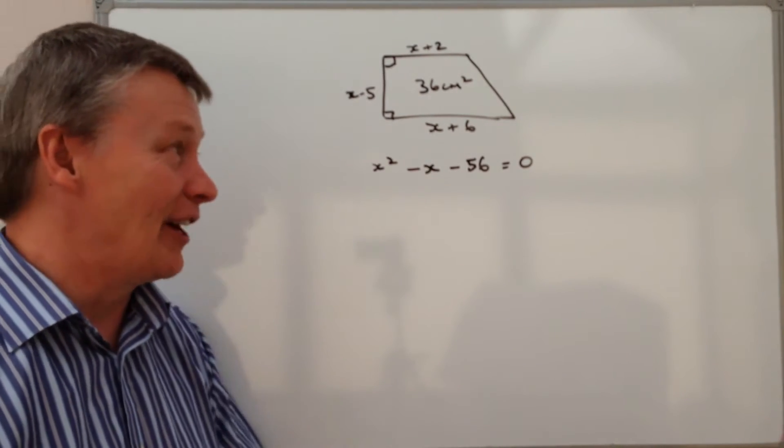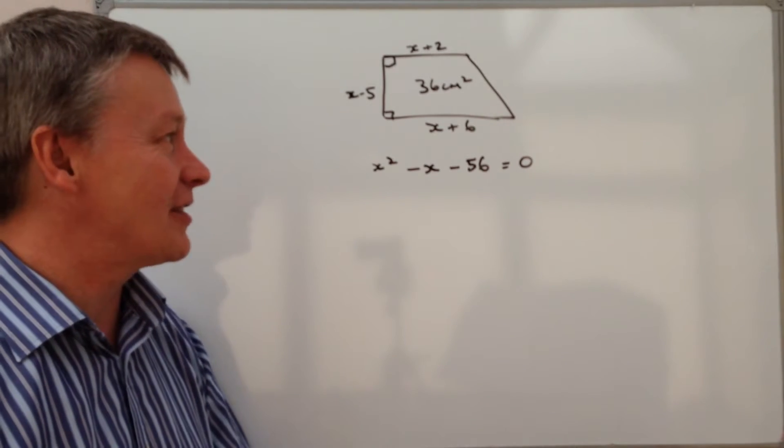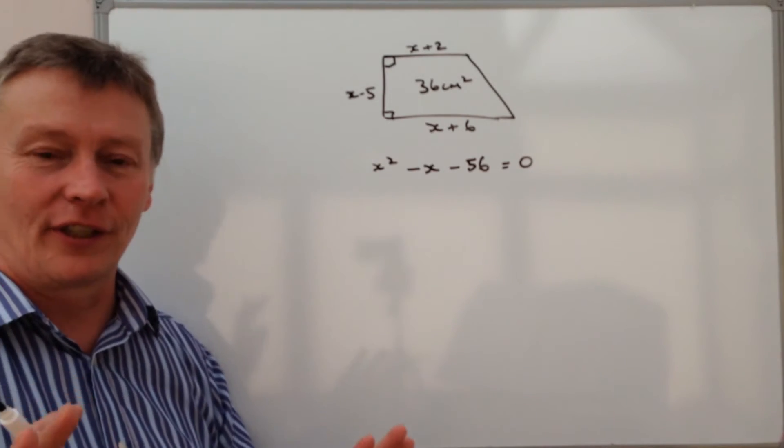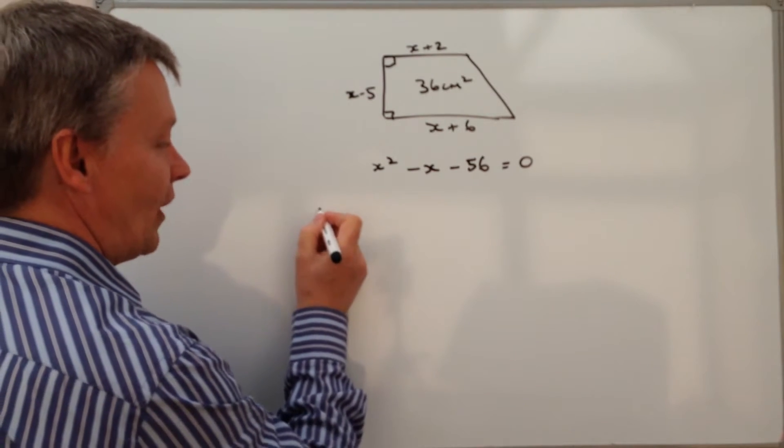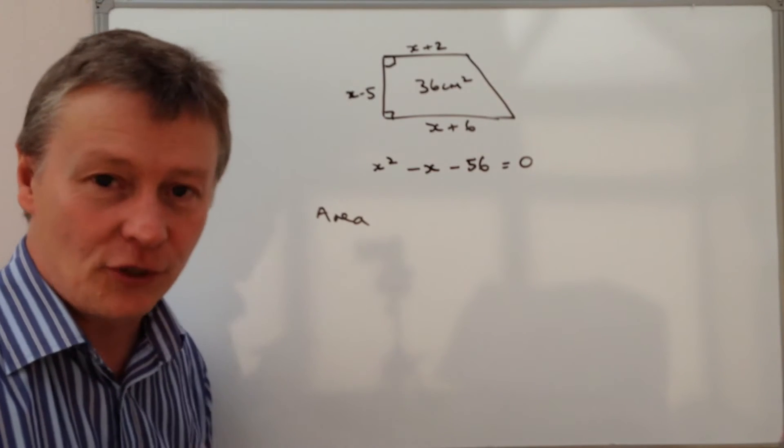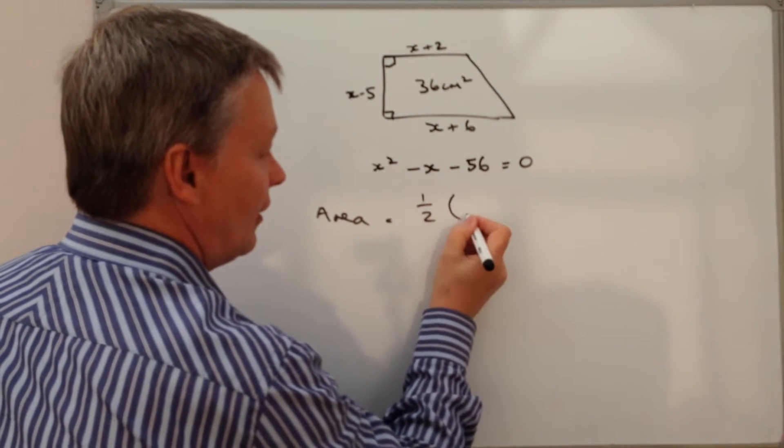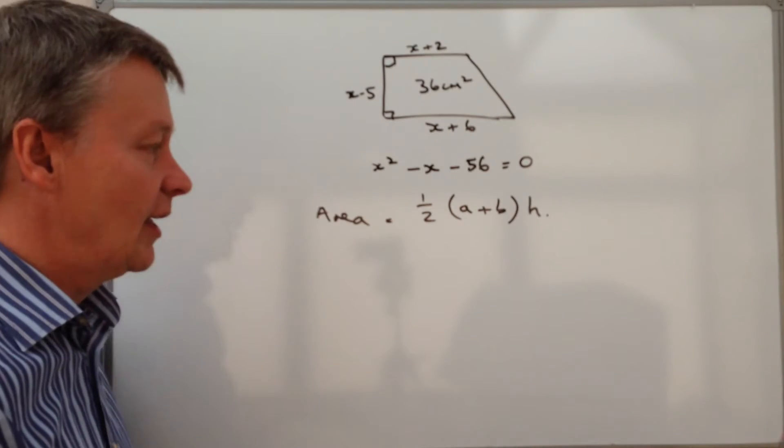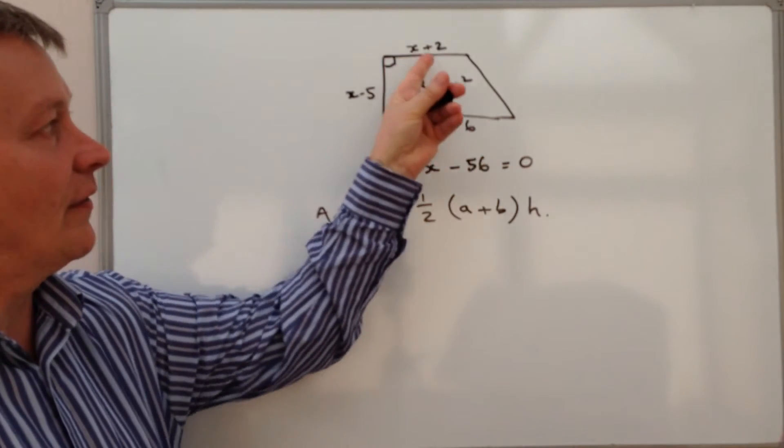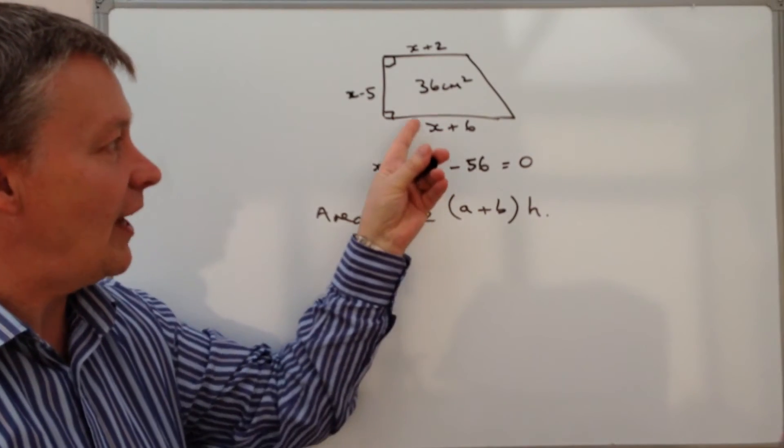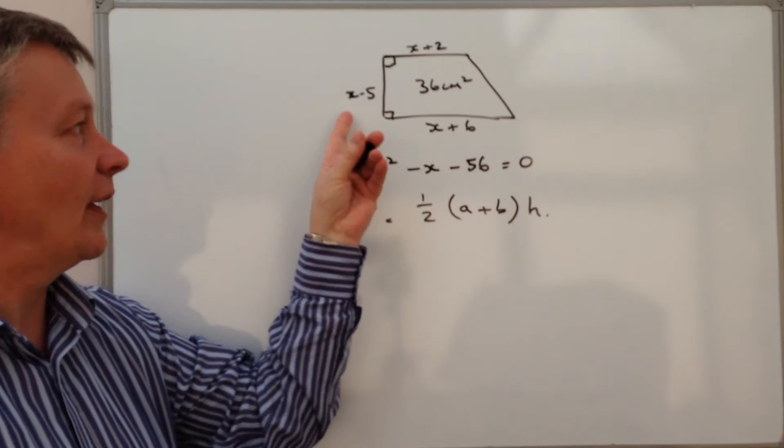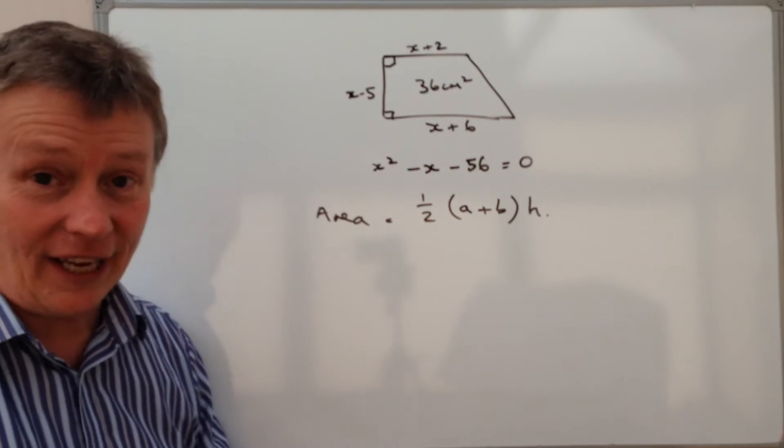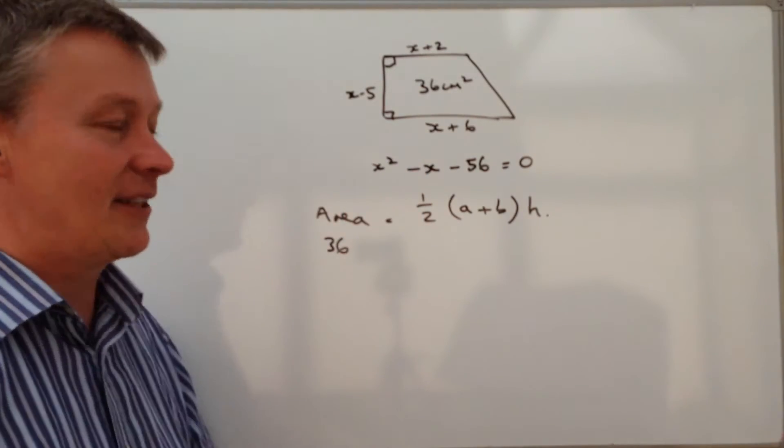A couple of things you need to look at first is that we've been given an area, so it's going to be an area calculation. The area of a trapezium, the general formula is one-half times a plus b times h, where a plus b is this dimension and this dimension. We're going to add that and that, then multiply by the value of h, which in this case is x minus 5, and make all of that equal to 36 centimeters squared.